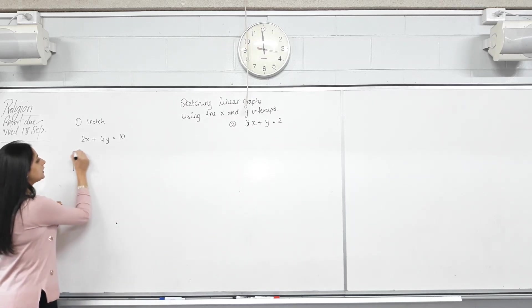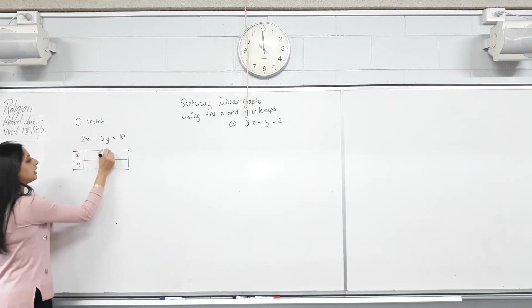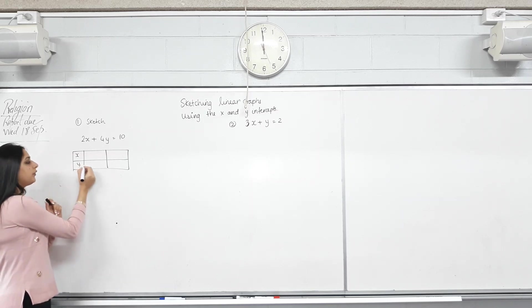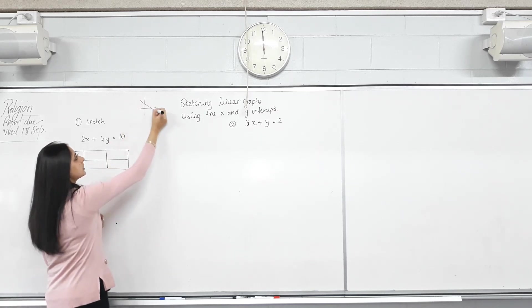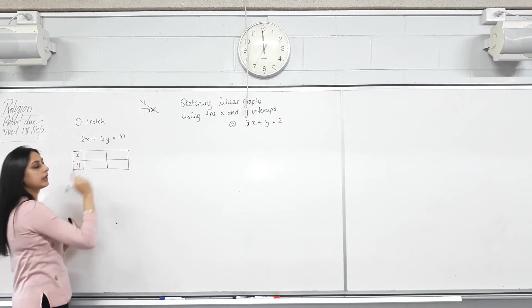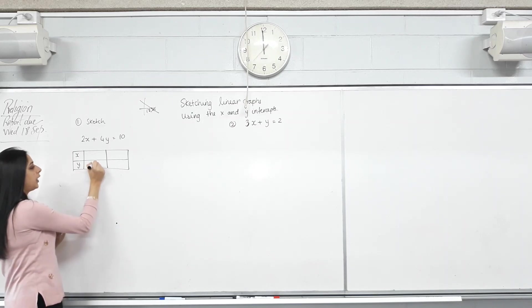So we did the table of values before, right? But now we don't need a random set of values, we need two points. When we find the X intercept, what's the value? So if a line's cutting the X axis, let's say at 0.5, what will be the Y coordinate? Zero. Zero. That means to find the X intercept, you put Y equal to zero.